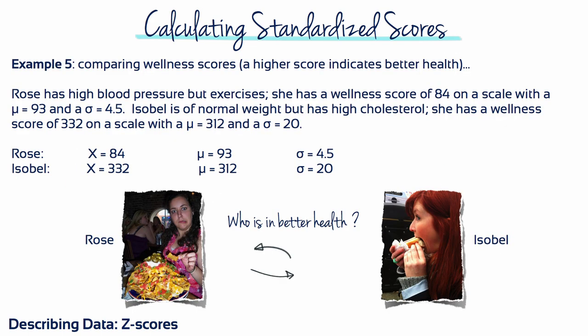Example 5: Rose has high blood pressure but exercises. She has a wellness score of 84 on a scale with a mean of 93 and a standard deviation of 4.5. Isabelle is of normal weight but has high cholesterol. She has a wellness score of 332 on a scale with a mean of 312 and a standard deviation of 20.